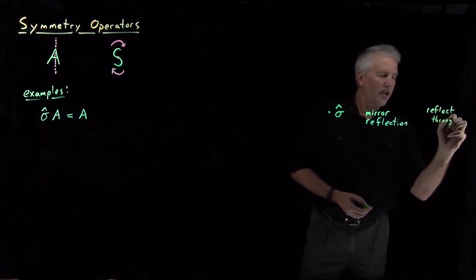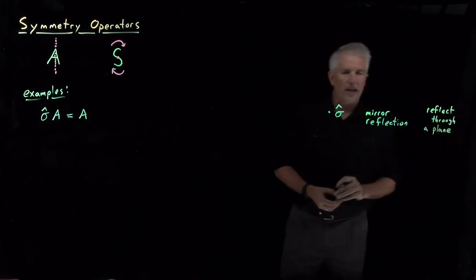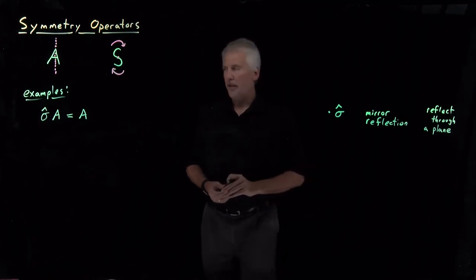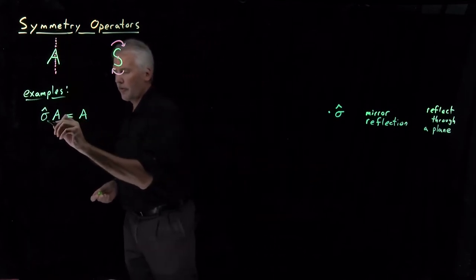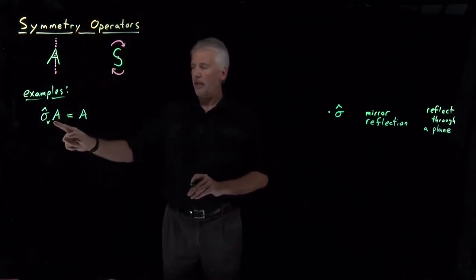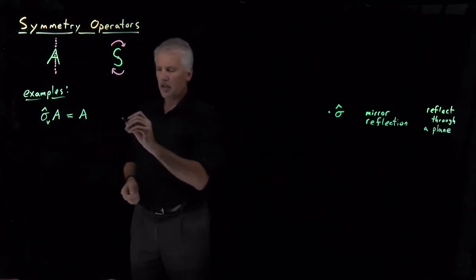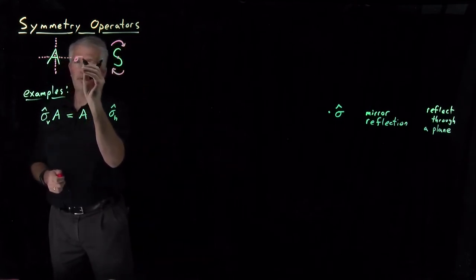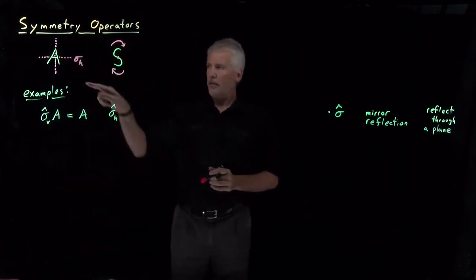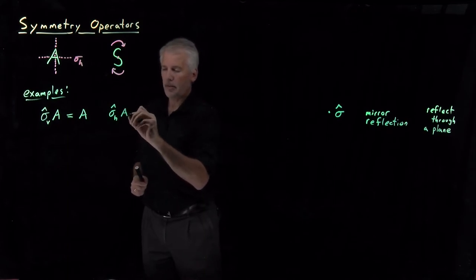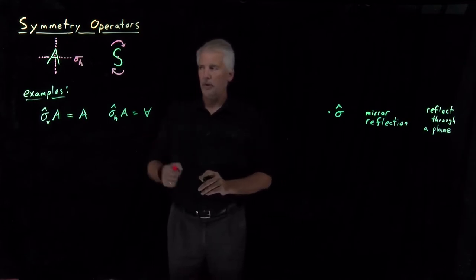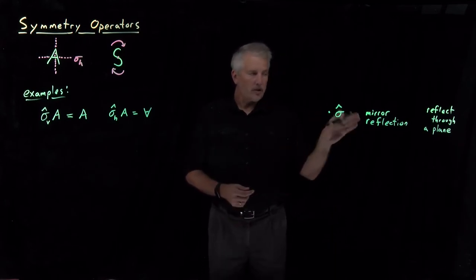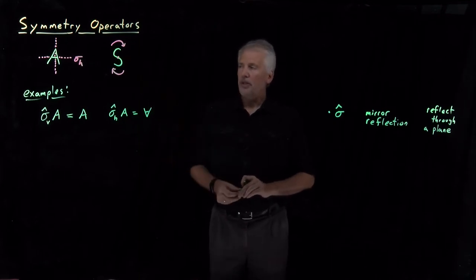Mirror reflection reflects the object through some plane — some flat surface — and we have to specify which plane we're reflecting through. Reflecting through a vertical plane gives the letter A back unchanged. But if I reflect the letter A through a horizontal plane instead, I get an upside-down letter A as a result. So we get different results reflecting through different planes, and it's necessary to specify which reflection we're talking about.